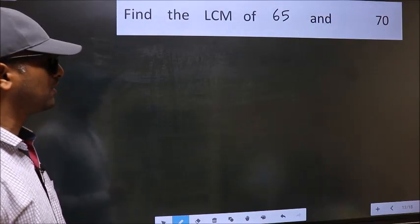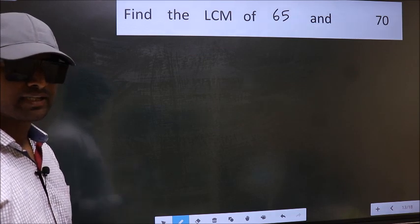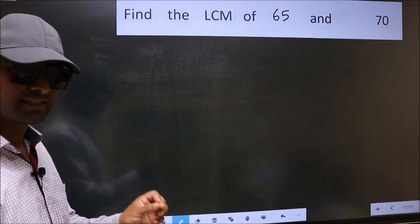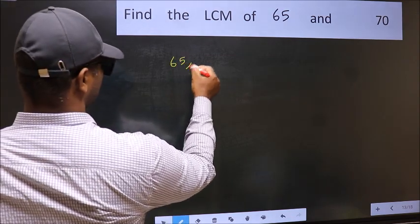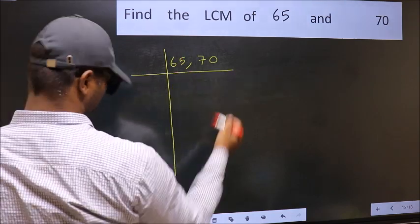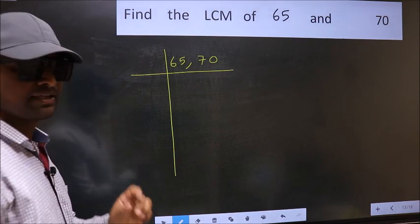Find the LCM of 65 and 70. To find the LCM, we should frame it in this way: 65, 70. This is your step 1.